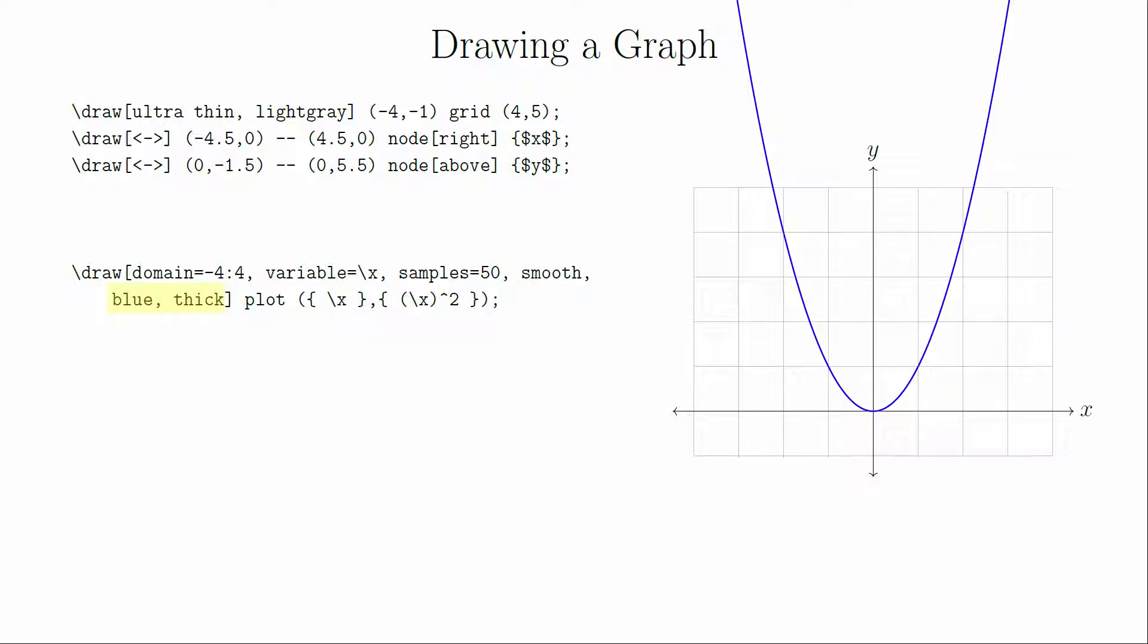In order to make this stand out more, we're going to make it blue and pick a thick line width. This plotting function is actually a parametric plot, but since we're graphing the function y equals f of x, the coordinate x will be our parameter. And in this case, we are going to graph the parabola y equals x squared.